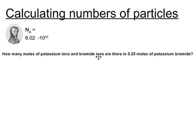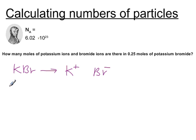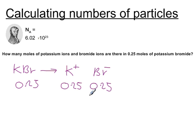Here's another question. How many moles of potassium ions and bromide ions are there in 0.25 moles of potassium bromide? Potassium bromide is made out of potassium ions and bromide ions. So if we have 0.25 moles of potassium bromide, each one is made out of 0.25 moles of potassium and 0.25 moles of bromide. Altogether then, we have 0.25 moles of potassium ions.